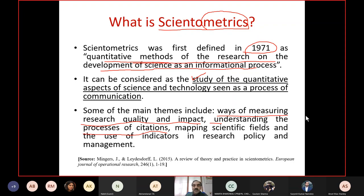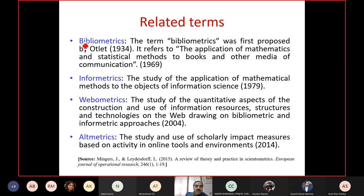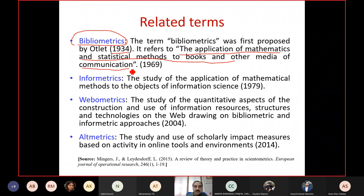There are other related terms. Bibliometrics is a slightly older term introduced in 1934, referring to the application of mathematics and statistical methods to books and other media of communication. It includes scientific articles, research papers, monographs, and so on. In this way, bibliometrics is slightly broader, taking into account almost everything which communicates science.